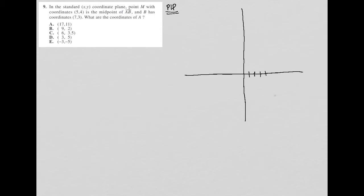So I'm going to count out to 5, so it's 1, 2, 3, 4, 5, so that's 5, and then up to 4, so 1, 2, 3, 4, so that's 4. So this point right here is point M.